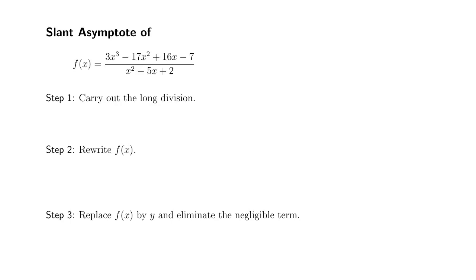Let's try to find the slant asymptote of the following rational function. Remember that when a rational function has the numerator whose degree is one higher than the degree of the denominator, then it will have a slant asymptote.